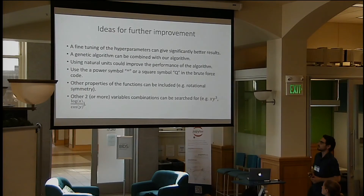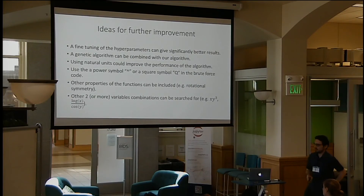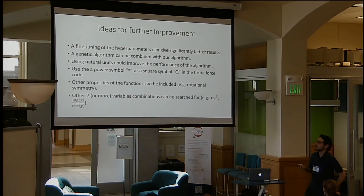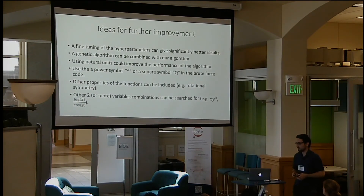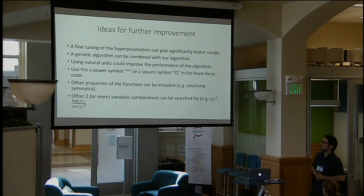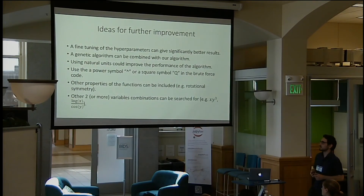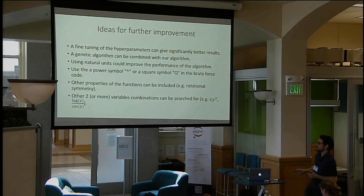There are several things we can do to improve our algorithm. We could fine-tune hyperparameters for each equation individually rather than using the same hyperparameters for all 120 equations. We could add genetic algorithms on top of our algorithm, which might work better with high amounts of noise. We could try using natural units for some equations, which might solve the four pi epsilon problem. We could add new symbols to our brute force code, such as a power or square symbol, for high-power equations. We can also search for other function properties such as rotational symmetry, and include other two-variable combinations beyond differences and sums.